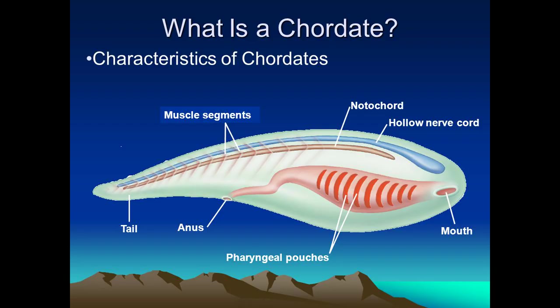Within our phylum, all chordates grow a notochord, a dorsal hollow nerve cord, a post-anal tail, and pharyngeal slits during development. These can then be lost or changed into other structures throughout ontogeny. For instance, our pharyngeal slits give rise to structures in our neck and face. We humans also reduce our post-anal tail to the point that only a few vertebrae exist.